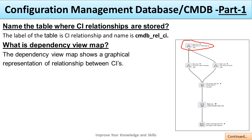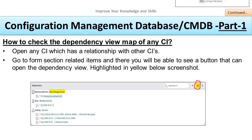What is the Dependency View Map? The Dependency View Map shows a graphical representation of the relationships between CIs. You can see here the graphical representation of CIs and how they relate to one another.